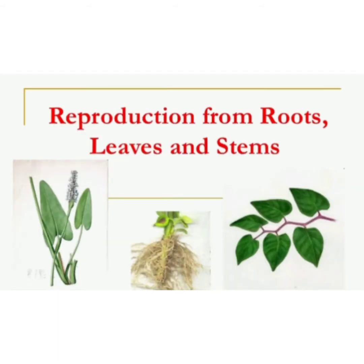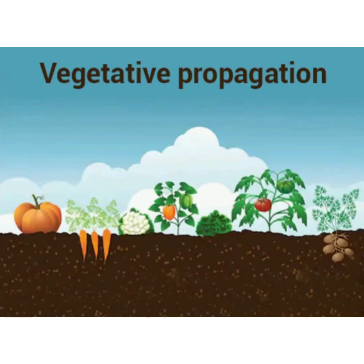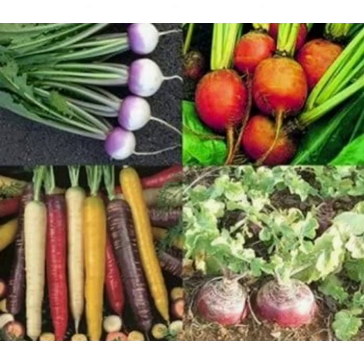Some plants reproduce with the help of their roots, stems or leaves. This method is called vegetative propagation. Carrot, turnip, beetroot and radish reproduce with the help of their roots. These roots are thick and fleshy, and new plants grow from their fleshy roots in the soil.